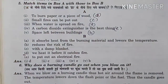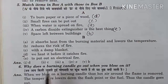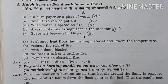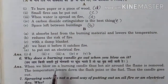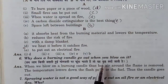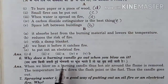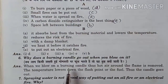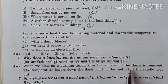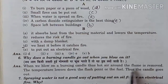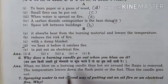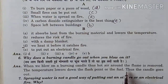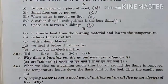Next question: why does a burning candle go out when you blow on it? — Jab aap jalti hui mombatti par phoonk marte hain, toh yeh bujh kyun jaati hai? When we blow on a burning candle, the hot air around the flame is removed, the temperature drops below the flash point of the fuel, and thus the candle goes out.